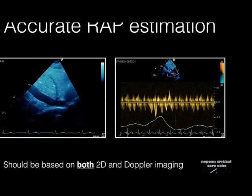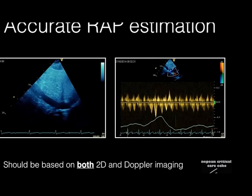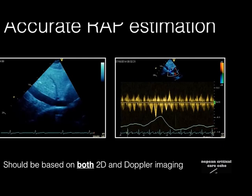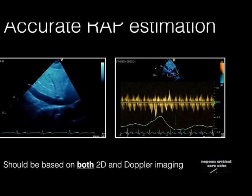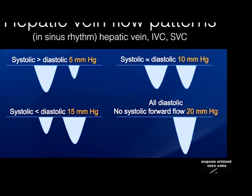For right atrial pressure estimation you can use both the IVC and hepatic veins — or if they're mechanically ventilated, just add 5 mmHg. Imaging the hepatic veins will also tell you if you've got severe TR via systolic flow reversal. The pattern: if systolic greater than diastolic, RAP is about 5; systolic equals diastolic, about 10; blunting, about 15; no systolic forward flow, 20 or above. This is used extensively in the pulmonary hypertension literature.